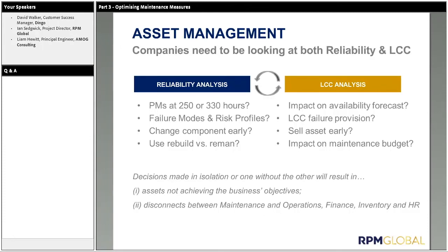The point being essentially that we can't make these decisions in isolation. We can't just look at the reliability side or the lifecycle side — we need to be looking at both. If we don't, we're not achieving the goal of how we wish to utilise these assets and the productive life and performance we want to get out of them. We're also disconnecting maintenance, finance, inventory, and HR from what they're relying on to synchronise the asset strategy, the supporting parts and people, the impact on finance and budget, working capital expectations, and whether operations is achieving the productivity they want.